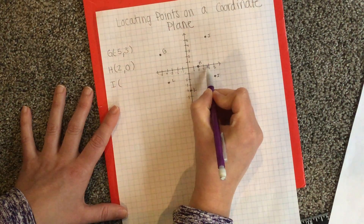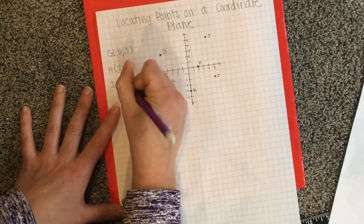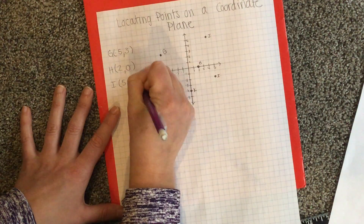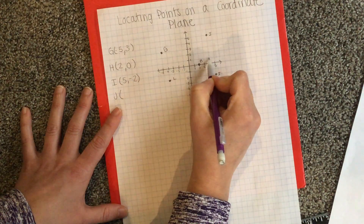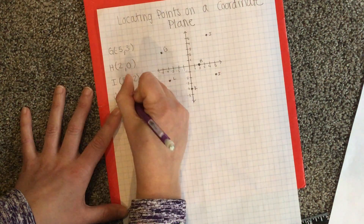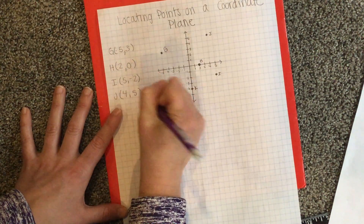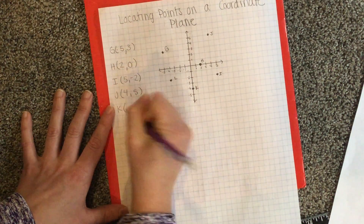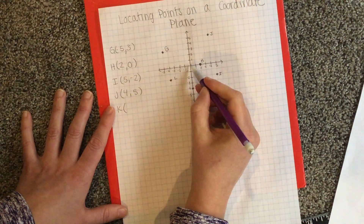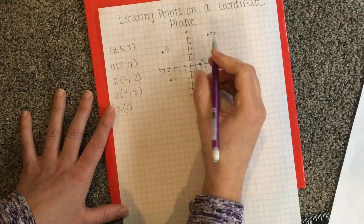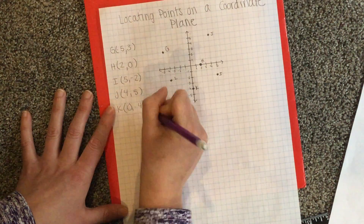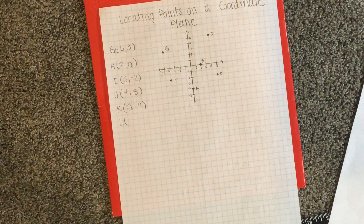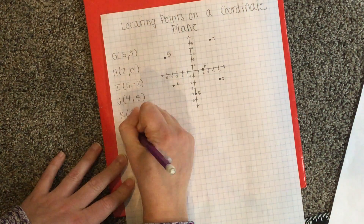Label the rest of the ordered pairs on this coordinate plane — pause and try that now. I is to the right 5 and down 2. J is to the right 4 and up 5. K is not right or left, but down 4. And L, the last one, is to the left 4 and down 2.